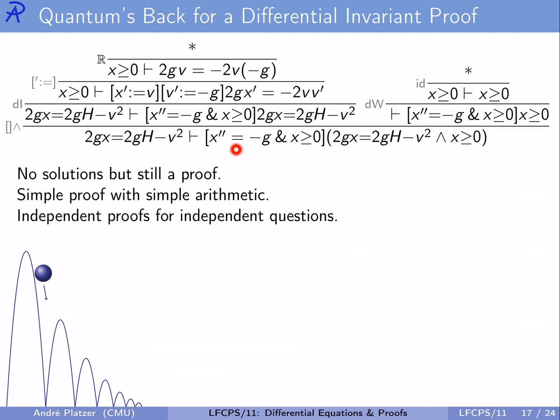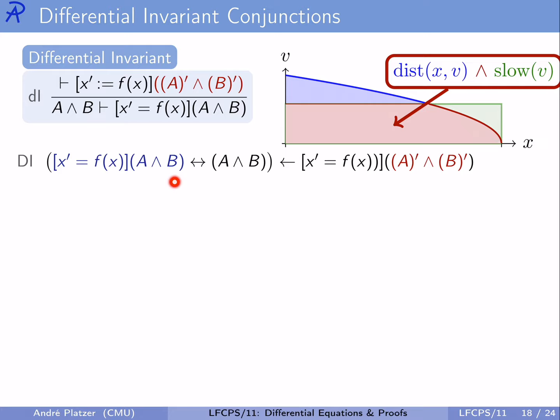Solving the differential equation x' = v and v' = −g would have integrated the system, plugged the solution into the postcondition, increased all kinds of degrees, and made reasoning very complicated. By contrast, worrying about differential invariance differentiates — lowering degrees and making everything easier. It's just a very simple local argument with almost no arithmetic needed. It's also important to notice that when postconditions are true for different reasons, it's good to split them and worry about the questions separately.